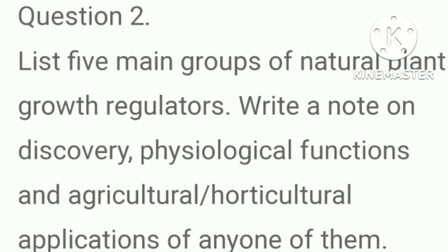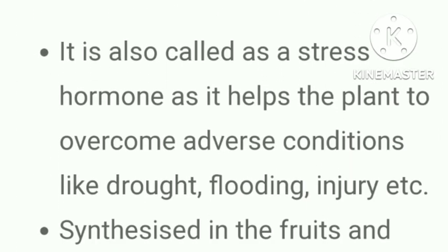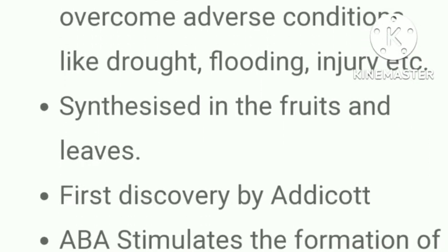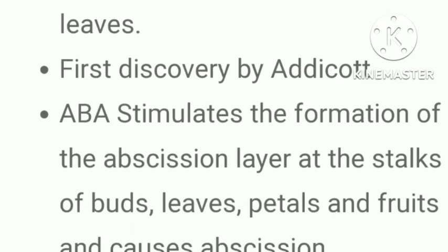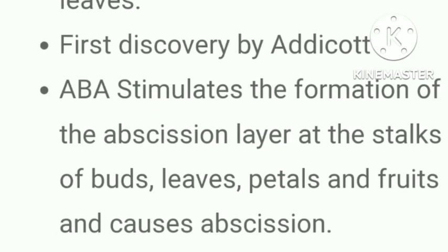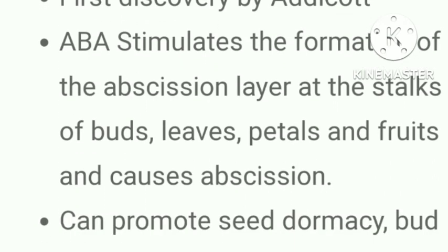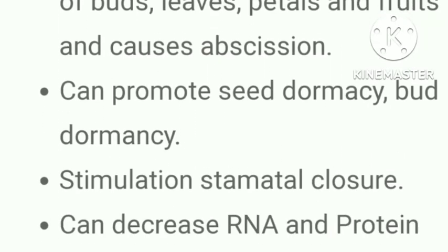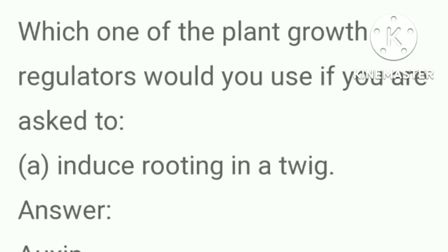List five main groups of natural plant growth stimulators and write a note on discovery, physiological functions and agricultural/horticultural applications of one. Abscisic acid is also called stress hormone as it helps plants overcome adverse conditions like drought, flooding and injury. Synthesized in fruits and leaves, first discovered by Addicott. ABA stimulates the formation of the abscission layer at stalks of buds, leaves, petals and fruits, causes abscission, promotes seed dormancy, stimulates stomatal closure, and decreases RNA and protein synthesis in leaves.